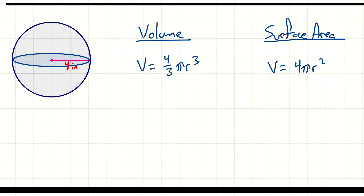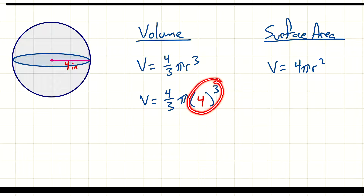I'll work out volume on this one for you. I'm going to start with four-thirds times pi times radius cubed, plug in four for the radius, and that's pretty much it — just do the calculations. We are going to leave our answers in terms of pi to make this easier.